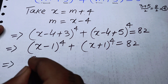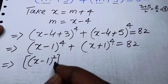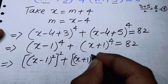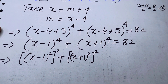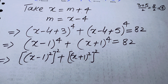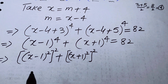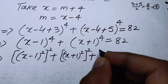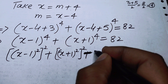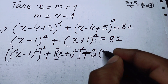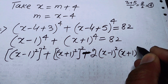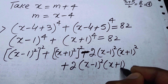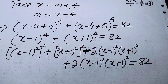We write (X - 1)^4 as [(X - 1)²]² and (X + 1)^4 as [(X + 1)²]². Now we move towards completing the square of these terms. To complete the square, we add and subtract 2(X - 1)²(X + 1)², writing the expression as: [(X-1)²]² - 2(X-1)²(X+1)² + [(X+1)²]² + 2(X-1)²(X+1)² = 82.